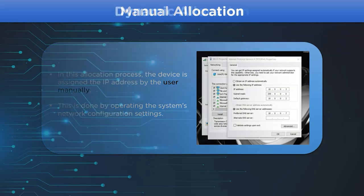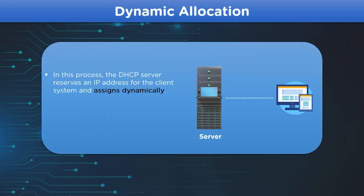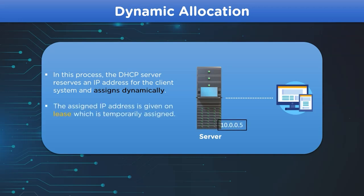In dynamic allocation, the client device receives all the relevant network configurations from the DHCP server and the system gets configured to access the internet. The provided IP address is given for a certain period, which is also termed as the lease.